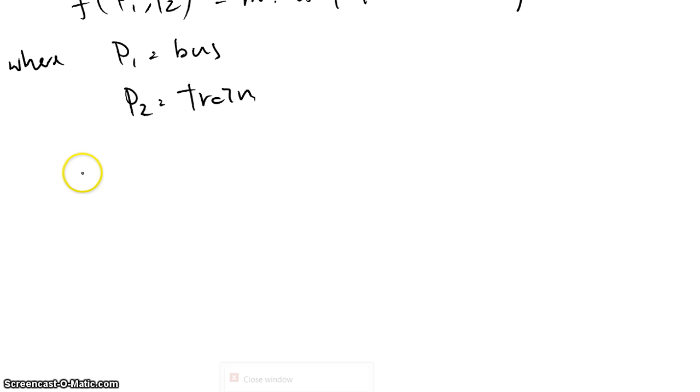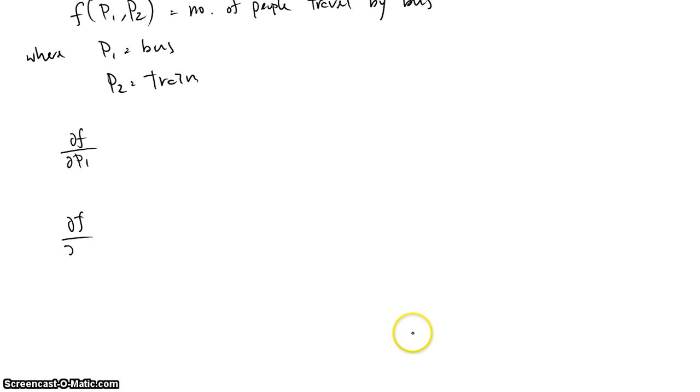Now we have to interpret ∂f/∂P1 and ∂f/∂P2. What do these two mean? We know that f(P1, P2) equals the number of people traveling by bus.